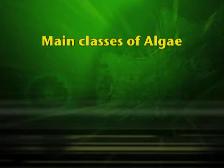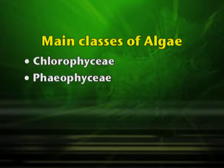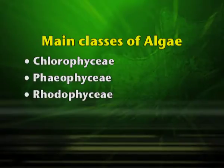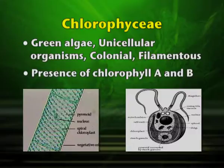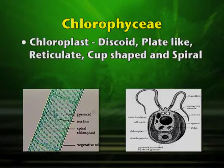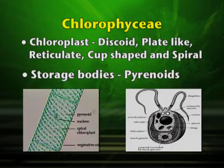The main classes of algae are Chlorophyceae, Phaeophyceae, and Rhodophyceae. Characteristics exhibited by Chlorophyceae: mostly they are green algae. They are unicellular organisms; they may be colonial or filamentous. They have the presence of chlorophyll A and B. The cell wall is made up of cellulose. The chloroplast is of various different shapes — it may be discoid, plate-like, reticulate, cup-shaped, or spiral. The storage bodies are the pyrenoids, which store starch.